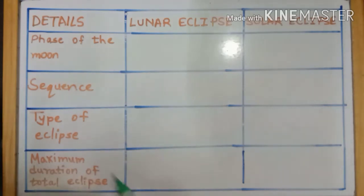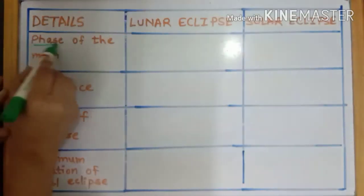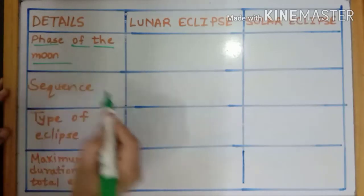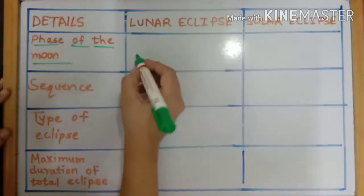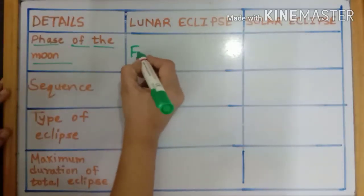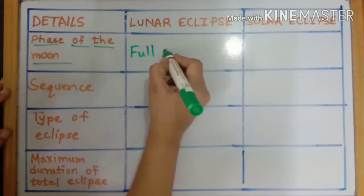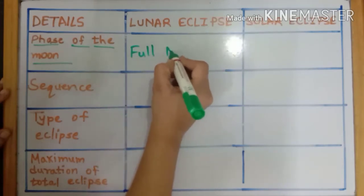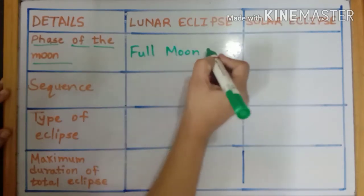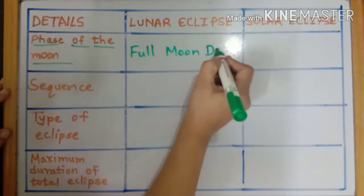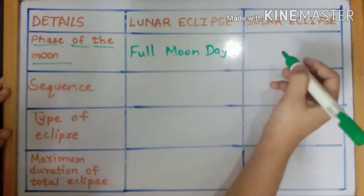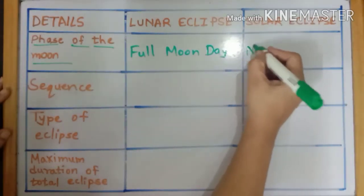The first characteristic is the phase of the moon. For a lunar eclipse, it is a full moon day, whereas for a solar eclipse, it is a new moon day.